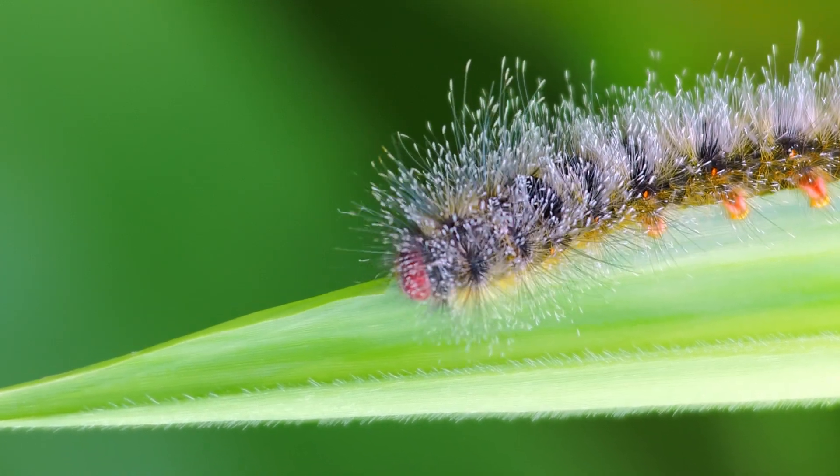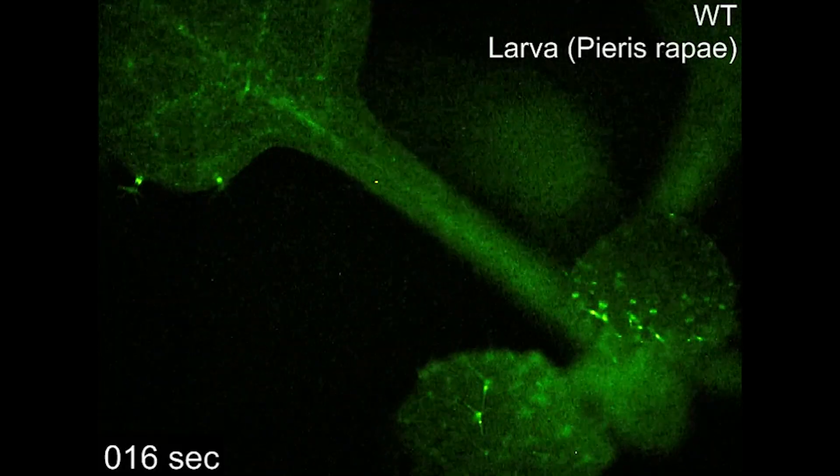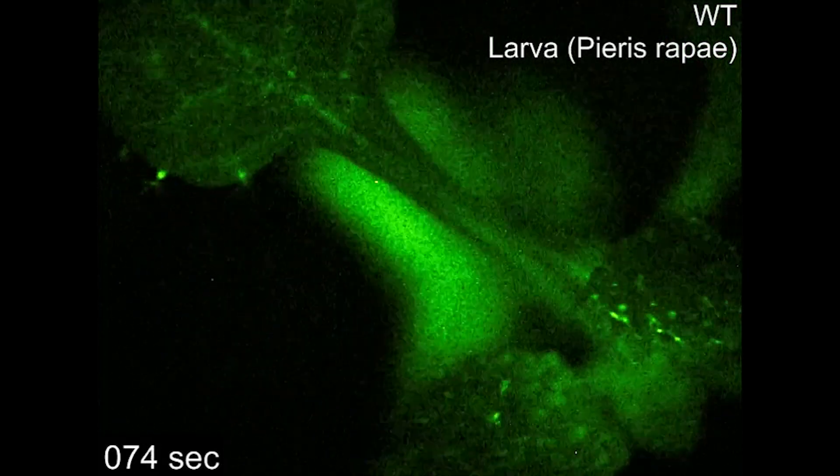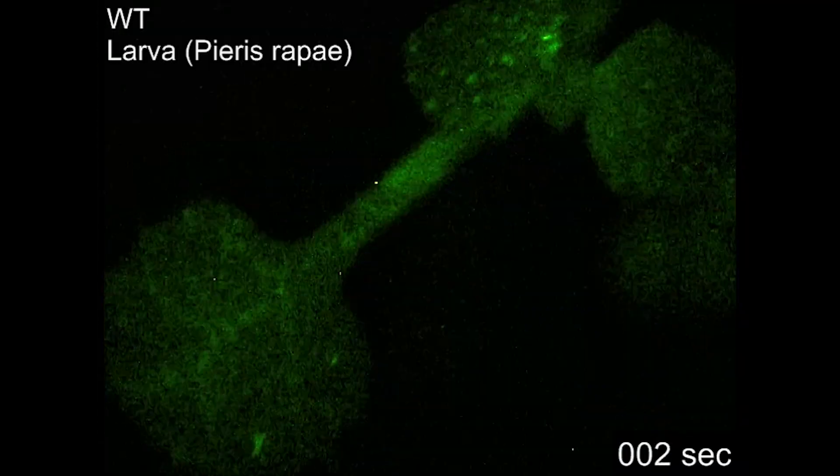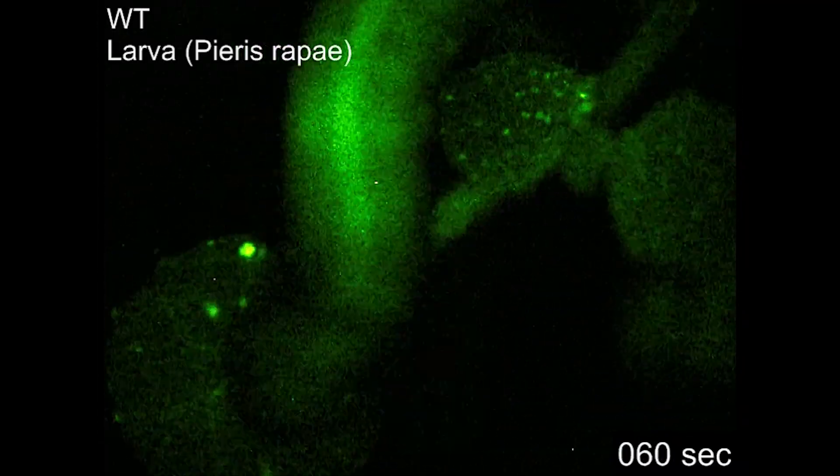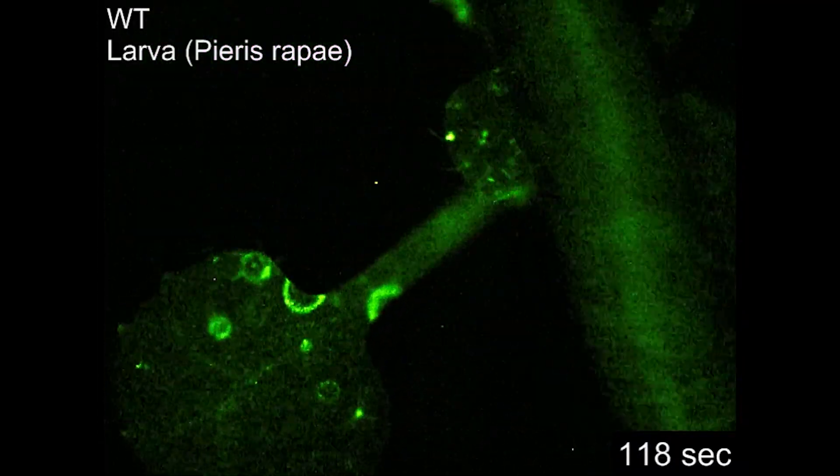What they do have, scientists have just discovered, is an innovative system of communicating danger to their other parts, using some of the same signals as in animal nervous systems. Researchers have shown that plants can sense the touch of a caterpillar's tiny toes and respond defensively.